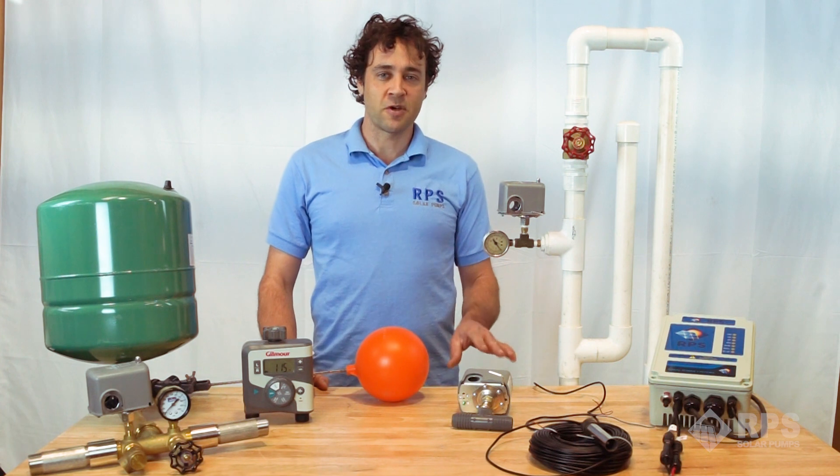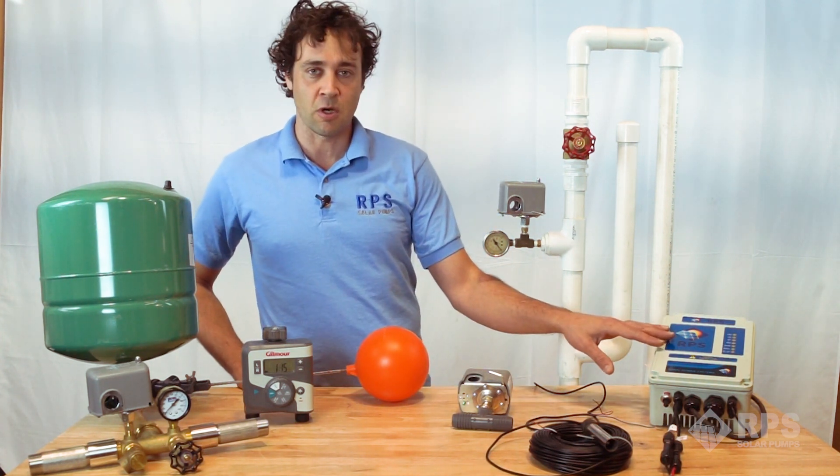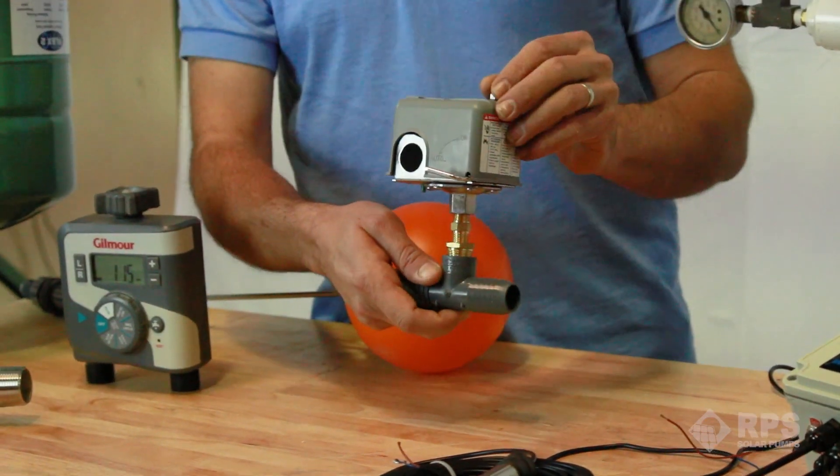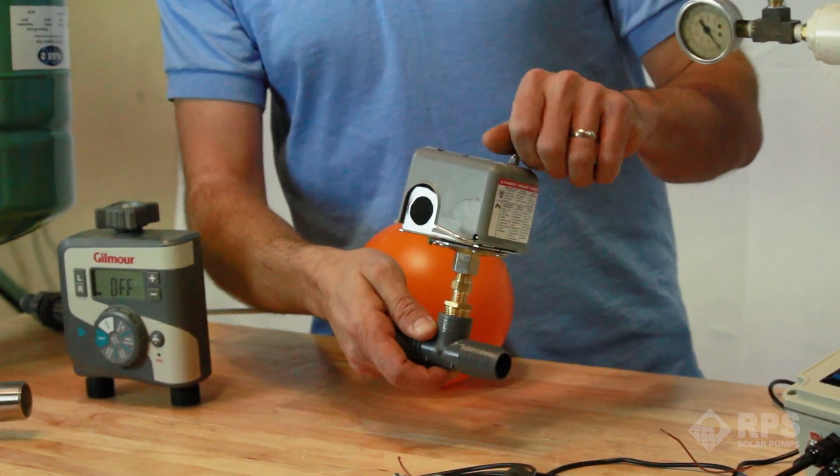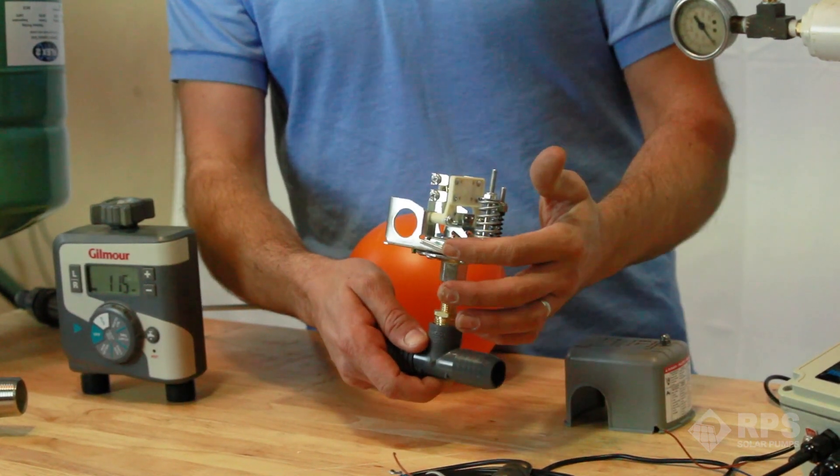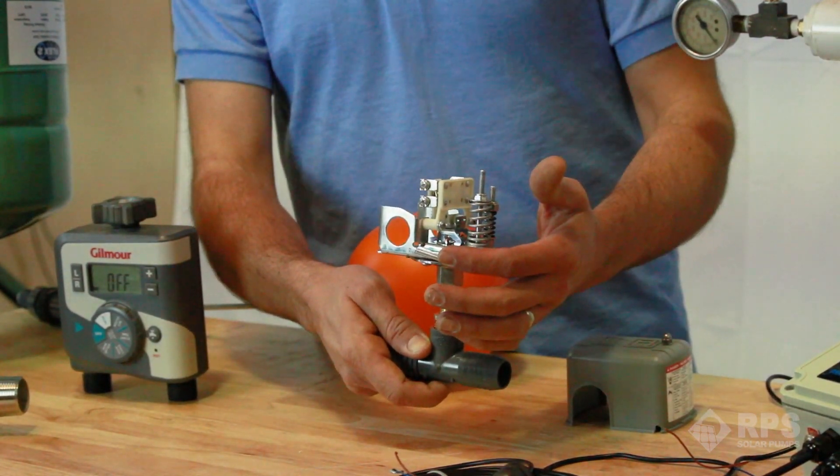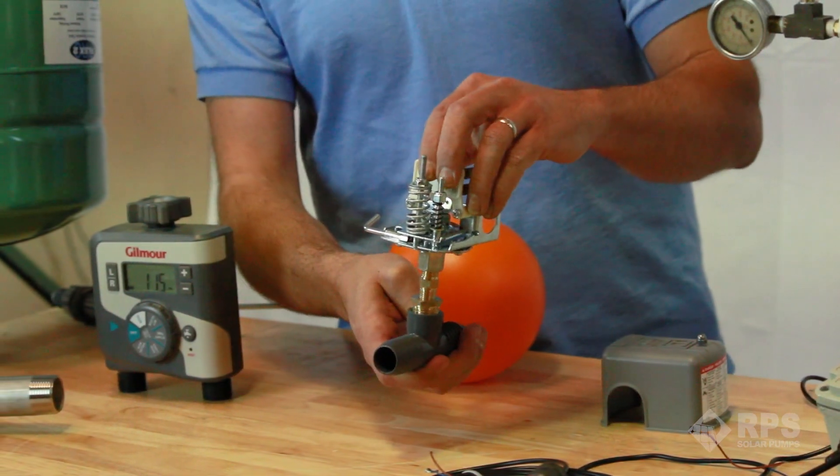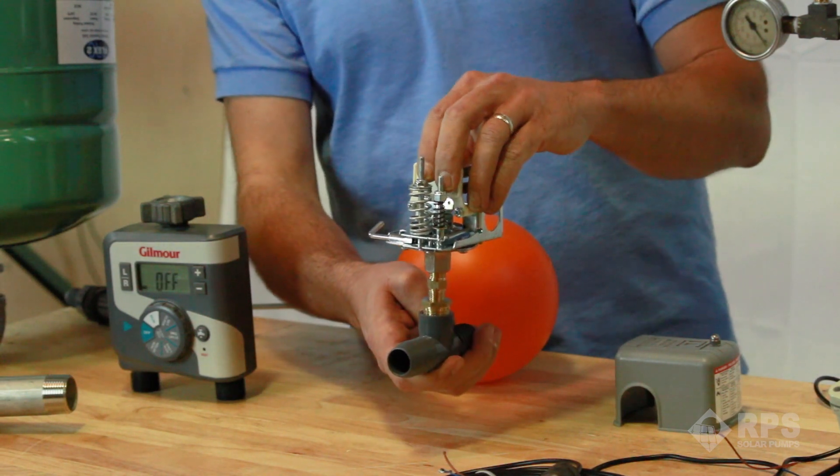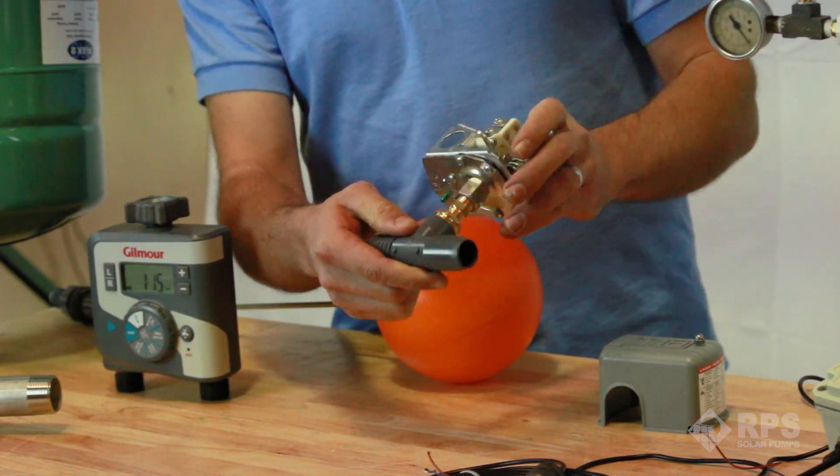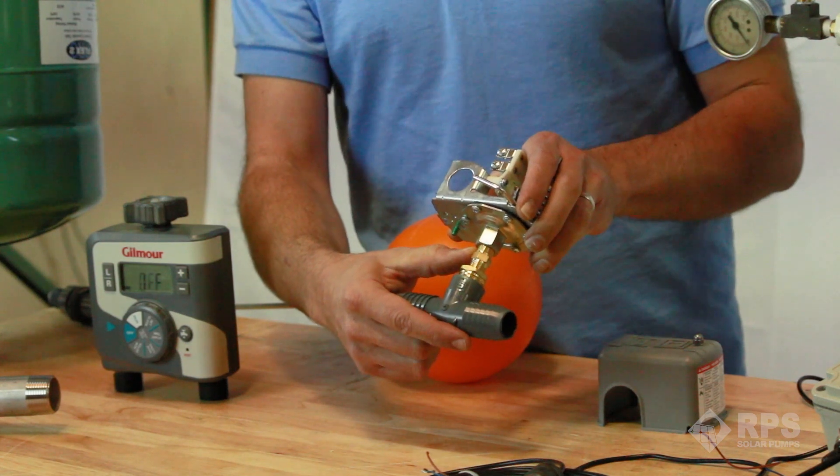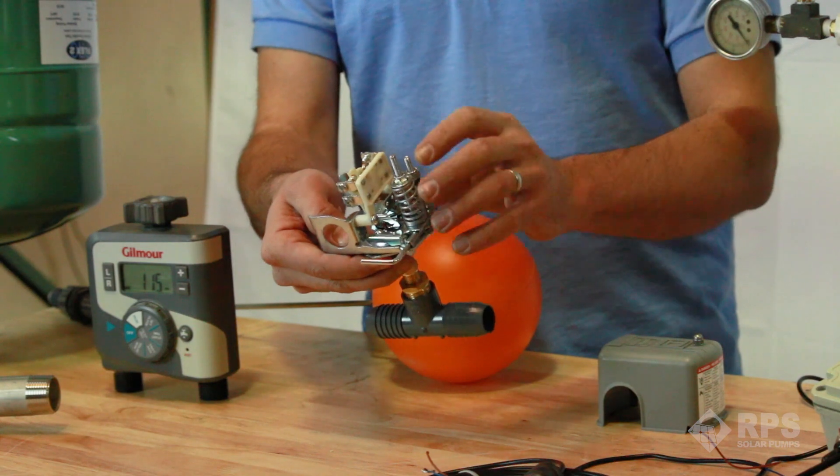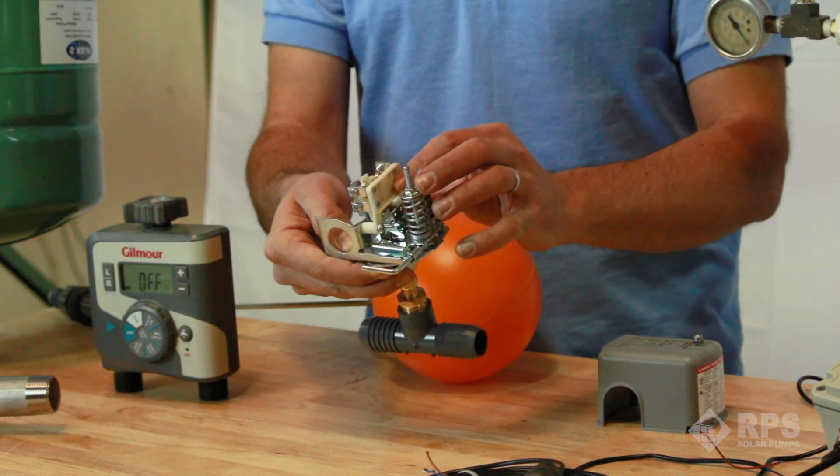We want to talk now about the functions and features of the pressure switch and how it integrates into our RPS solar system. What you have here is a pressure switch with the all-weather cover. We'll take this off. You can see on the front there's a lever that allows you to select the different mode that the pressure switch will operate in. There's some spring-loaded adjustment bolts right here and we'll get to those later, and then on the bottom this is the pressure port that sends the water signal to a diaphragm down below that translates that into whether or not the switch will remain open or closed.